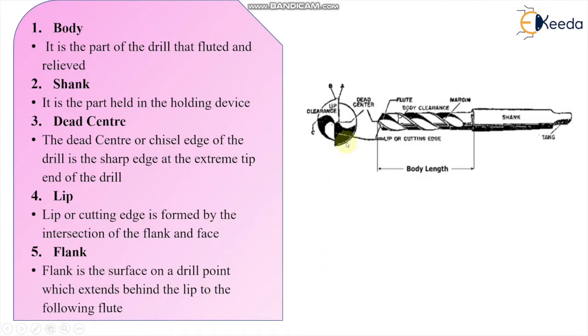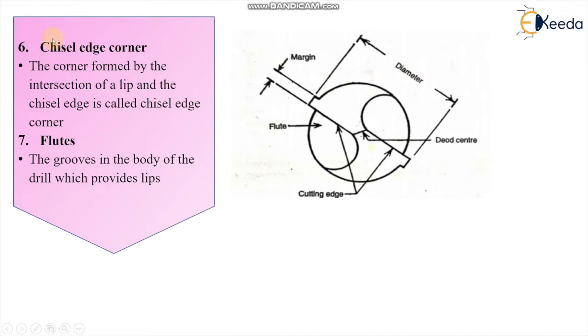Then lip is what? You can see here, these are the lips. Lip or cutting edge is formed by the intersection of the flank. These are the flanks which are meeting, or at the intersection of these flanks, we can have this lip or cutting edge. Then the flank, the flank is the surface on a drill point which extends behind the lip. The chisel edge corner, the corner formed by the intersection of the lip and the chisel edge is also called the chisel edge corner. This is the chisel edge.